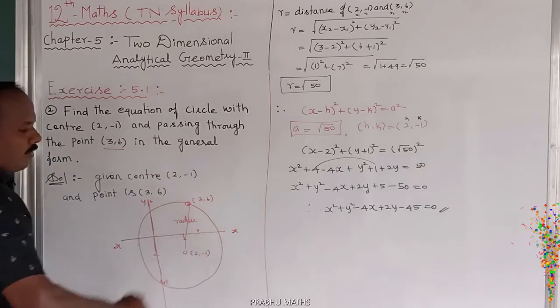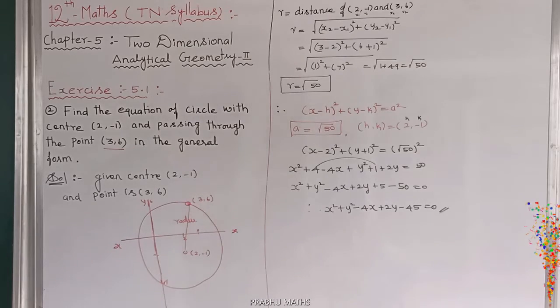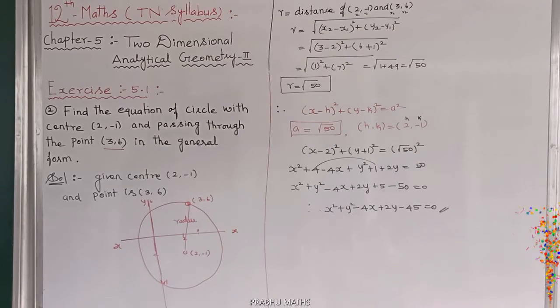This is the general form of the circle equation. It is easy to find using the distance formula between the center and the given point to determine the radius, and then substituting into the standard equation.